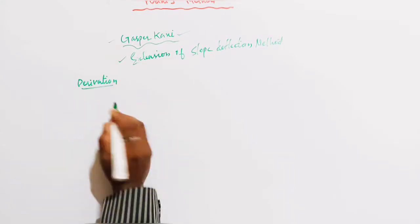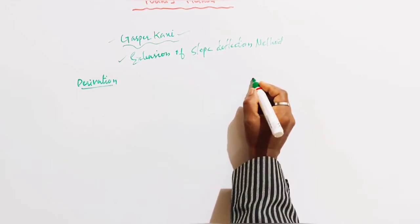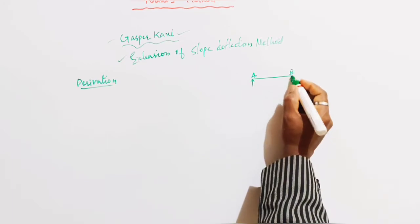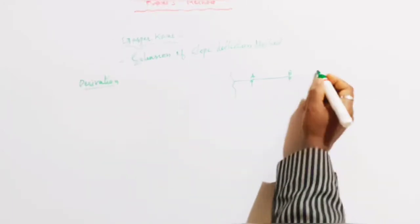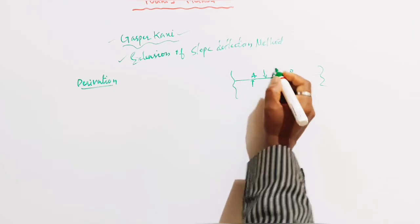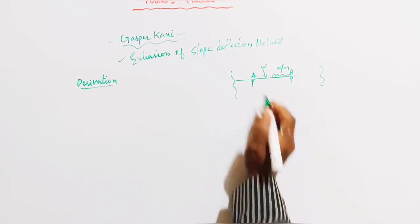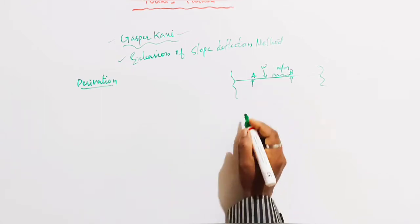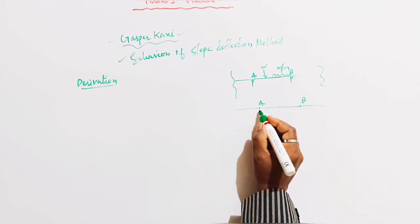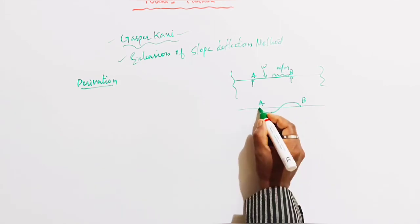Let's see the derivation. Consider span AB of a continuous structure. The loading includes a point load W and a UDL of W per meter run. The deformed shape of member AB is shown, with end A and end B indicated.